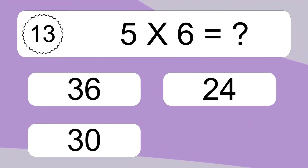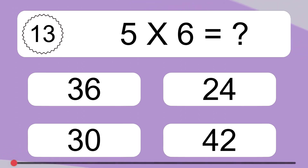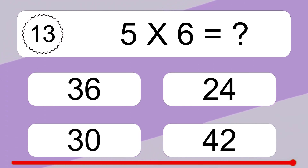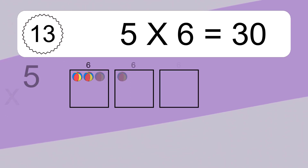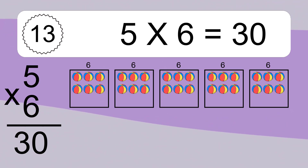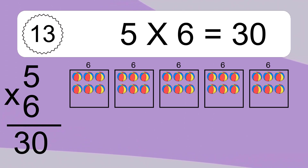5 times 6 equals what? 5 times 6 equals 30. We have 5 boxes, and each box has 6 colorful balls inside. If you count all the balls in all the boxes together, you will have 5 times 6 balls. This equals 30 balls.